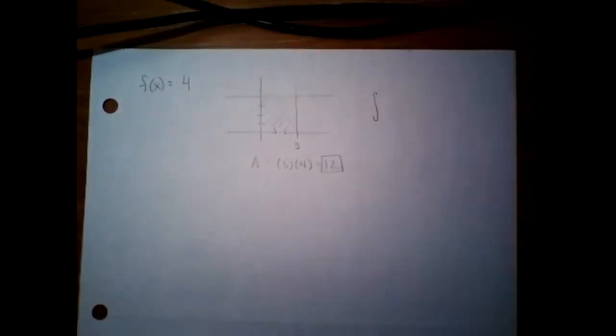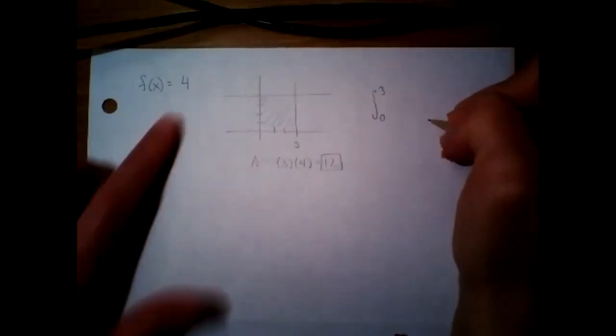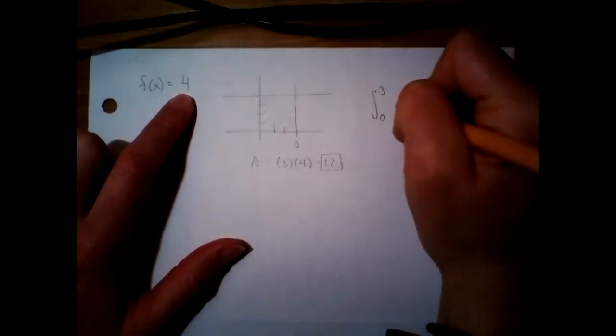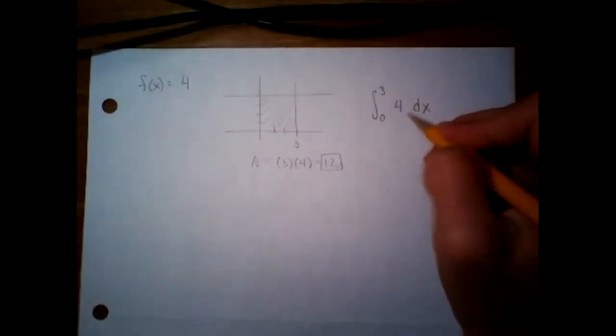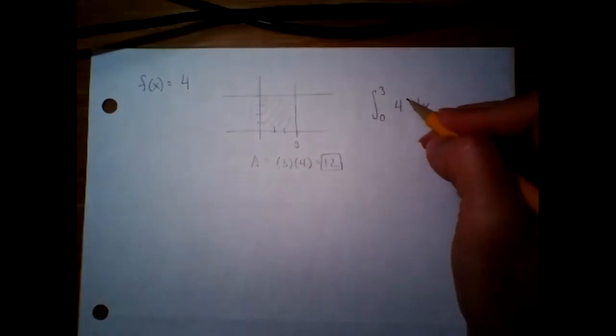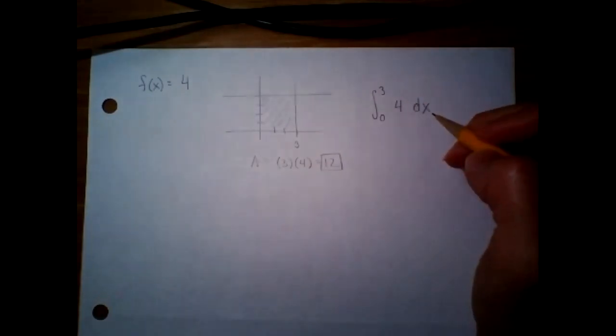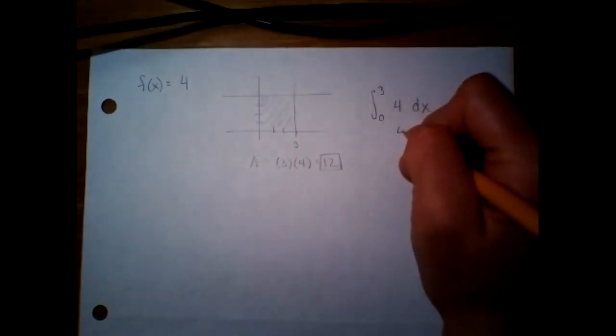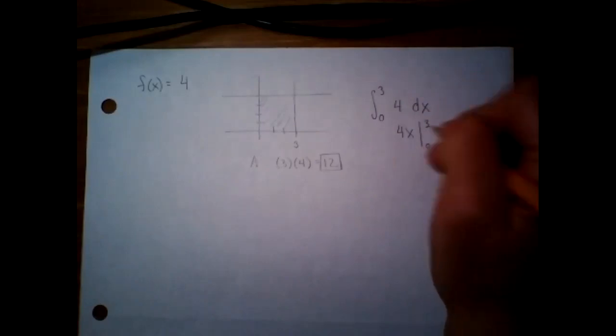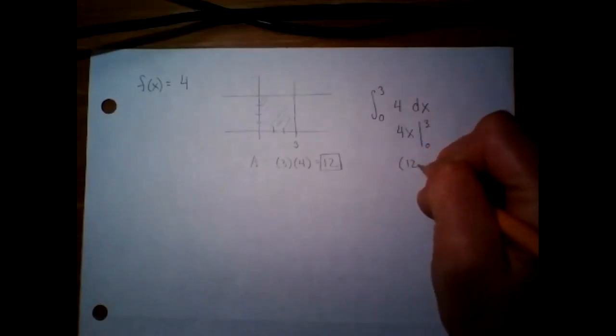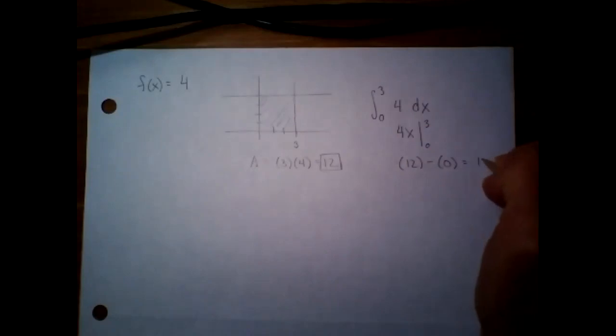To do calculus, it would be integral from where to where. What are our boundaries? Good. Zero to three. Our function is just four dx. What is the anti-derivative of four? Good. Four x such that zero to three upper boundary minus lower boundary gives you 12.